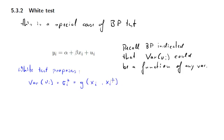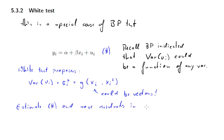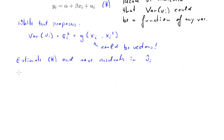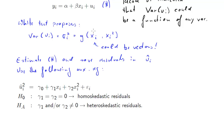For the White test, if you have your explanatory variable from the regression model being xi — that could be a vector — then we propose that the variance could be a function of xi and of the squared value. How do we proceed? As before, we estimate the regression model and save the residuals in Ui hat. The next step is to calculate the squared estimated residuals Ui hat squared, and we use the following auxiliary regression: Ui hat squared as the dependent variable, and as explanatory variables we use our explanatory variable and the squared values of these.